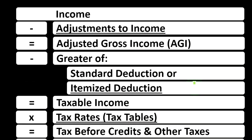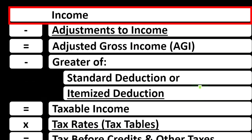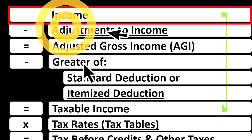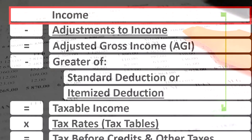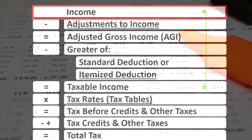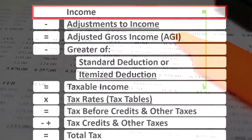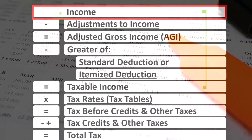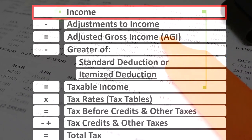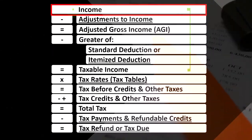Looking at the income tax formula, we're focused on line one income. The first half of the income tax formula is essentially an income statement — just an outline where other forms and schedules flow in. The Schedule E is in essence an income statement in and of itself, having rental income minus rental expenses, with the net rental income rolling into line one of the income tax formula.